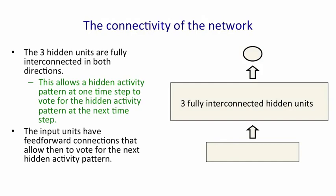The input units have feedforward connections to the hidden units, and that's how it sees the two digits in a column. And similarly, the hidden units have feedforward connections to the output unit, and that's how it produces its output.